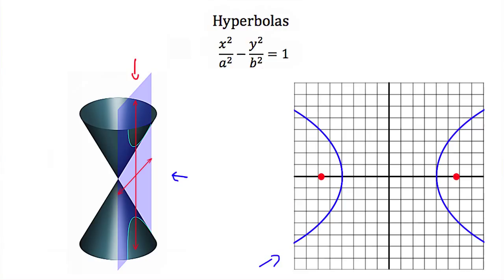Notice that this hyperbola has two vertices. It also has two foci, which are depicted in red. A hyperbola is a special shape because every point that makes up this hyperbola has the same difference of distances to these two foci.